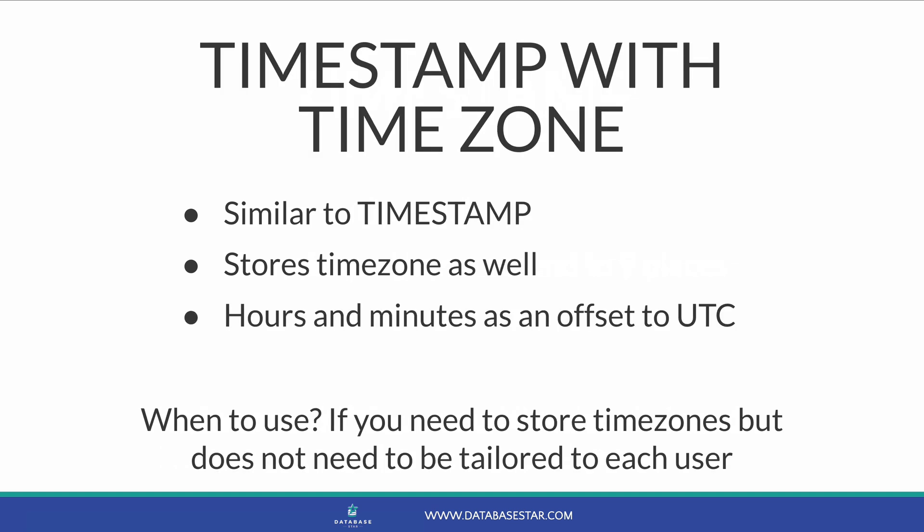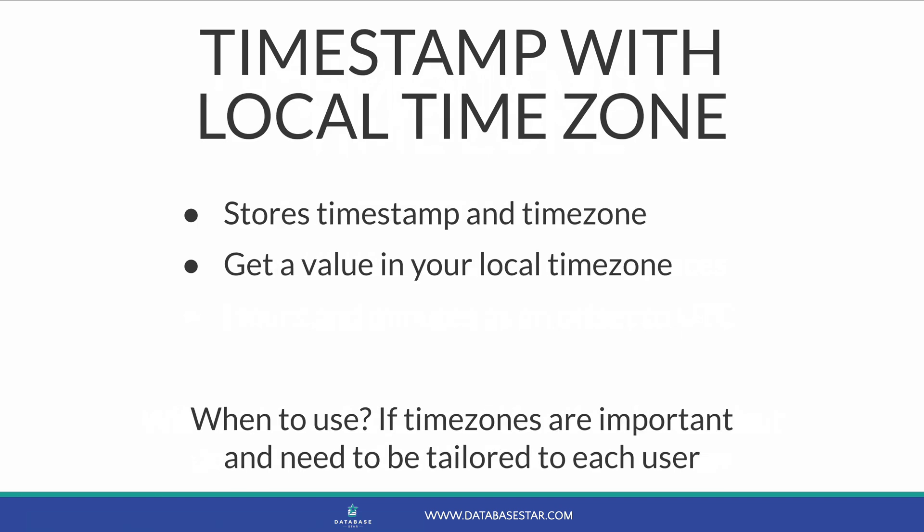The TIMESTAMP WITH TIME ZONE data type is similar to TIMESTAMP but it also stores the time zone — year, month, day, hour, minute, second, fractions of a second, and the time zone as an offset to UTC, either positive or negative. Use this when you need to store time zones but the display does not need to be tailored to each user. The TIMESTAMP WITH LOCAL TIME ZONE data type also stores a timestamp and time zone, but when you select from it you get the value in your local time zone, rather than the database time zone. Use this when time zones are important and need to be tailored to each user.